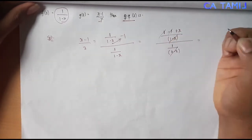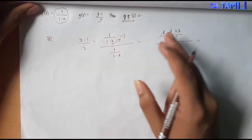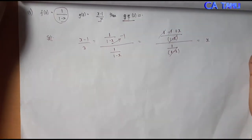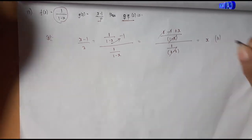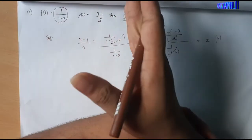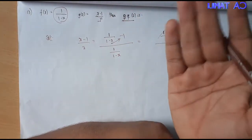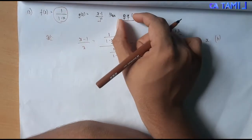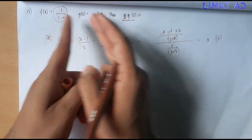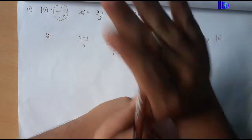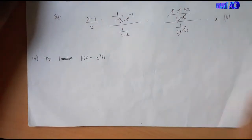We cancel the next step and we get the final answer. So fog of x is the value of f of x. If you give g of x, you can find the value of f of x. Sum number 14.